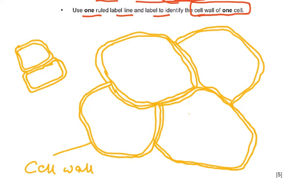The mark scheme is very clear. The five marks are: first, minimum size, all lines continuous, thin, sharp, no shading; second, draws only four whole cells and each cell touches at least two other cells; third, two lines around each cell and three lines where cells touch; fourth, correct shape of the cells; and fifth, a label line and label to one cell wall. These are the easiest five marks in the whole exam — I'm a hundred percent certain everybody should get them.